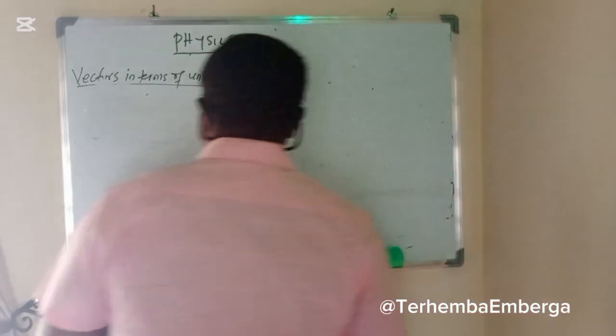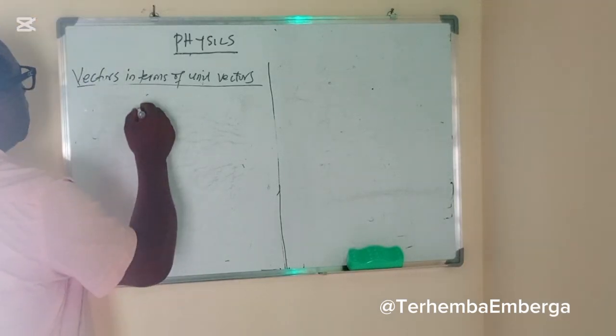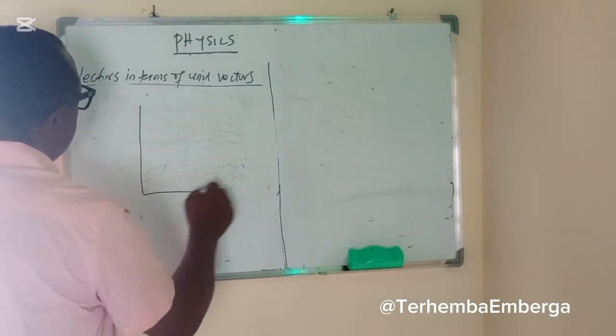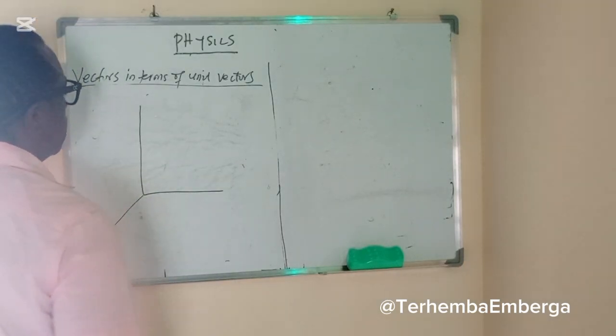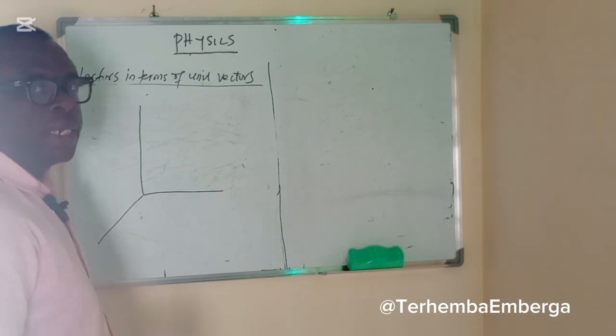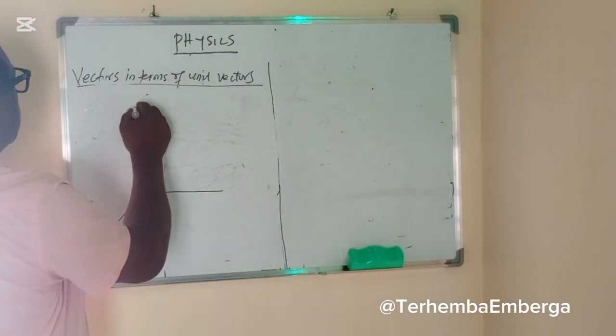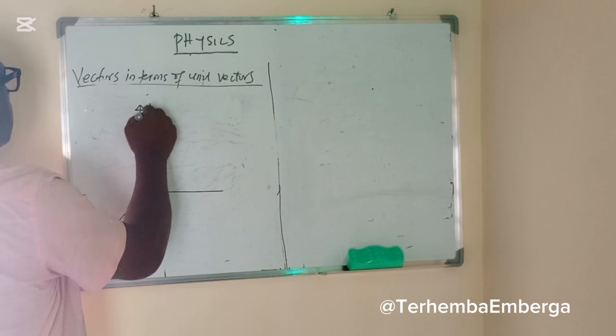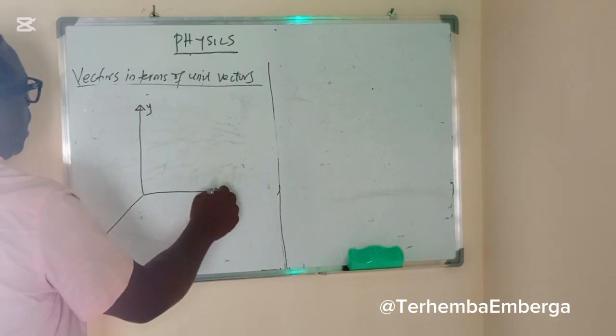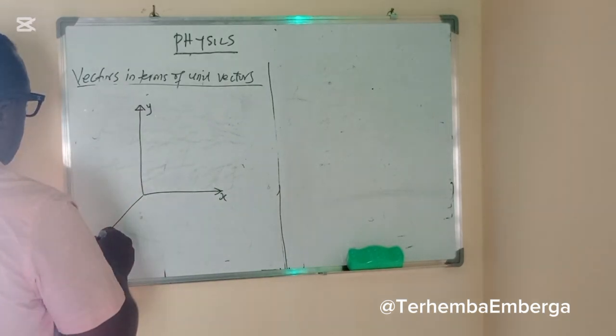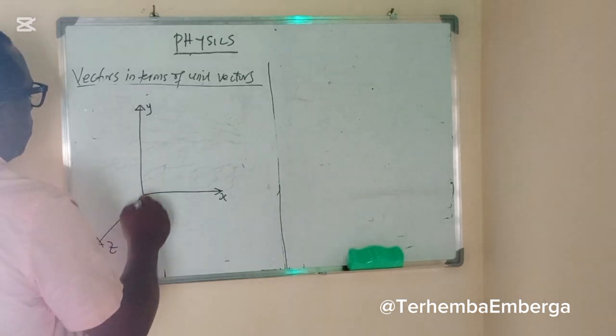A vector can be represented in 3D as three dimensions. When we talk about 3D, it means three dimensions. This is the Y, this is the X, this is the Z, and this is the origin.